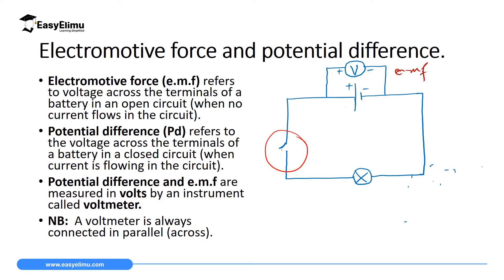Then we have what we call potential difference. Potential difference refers to the voltage across the terminal of a battery in a closed circuit. Remember, a closed circuit is one that allows current to flow in a complete path. Let me draw another simple circuit — the first one we drew is for EMF; now let me draw another one for potential difference.